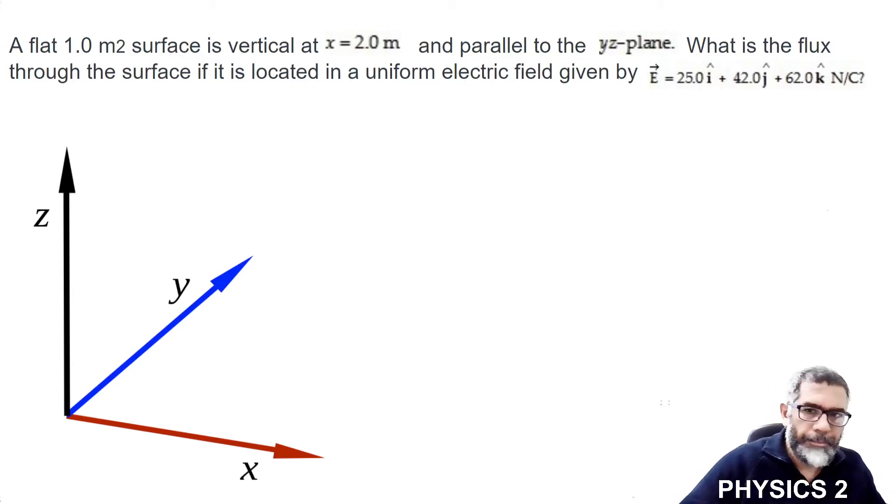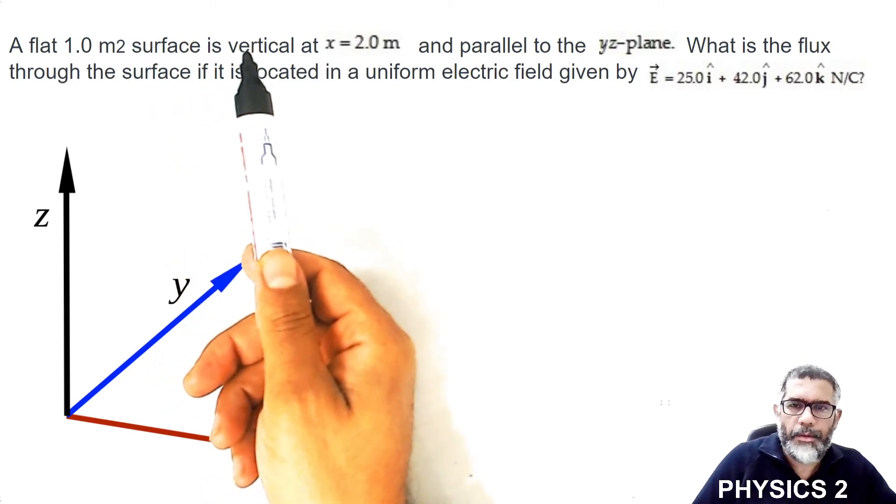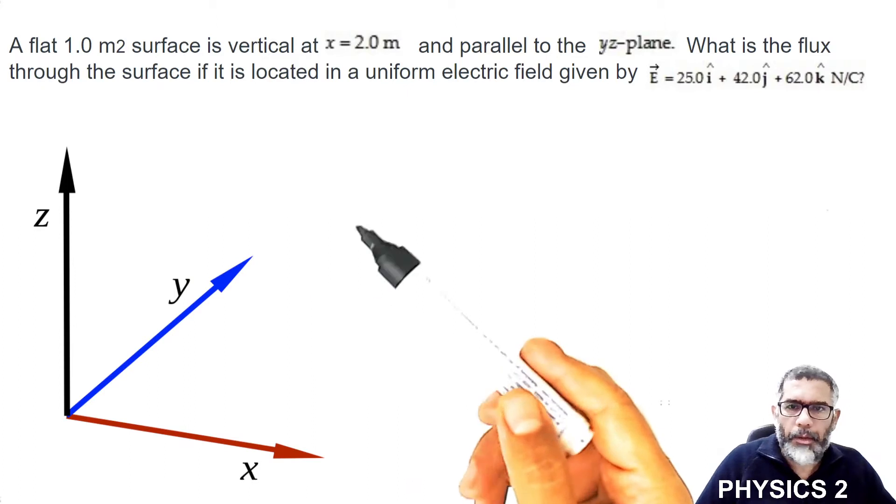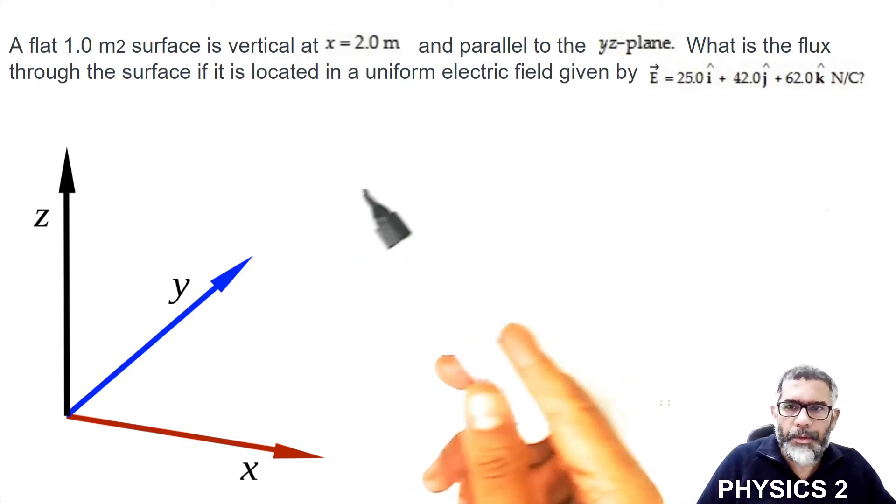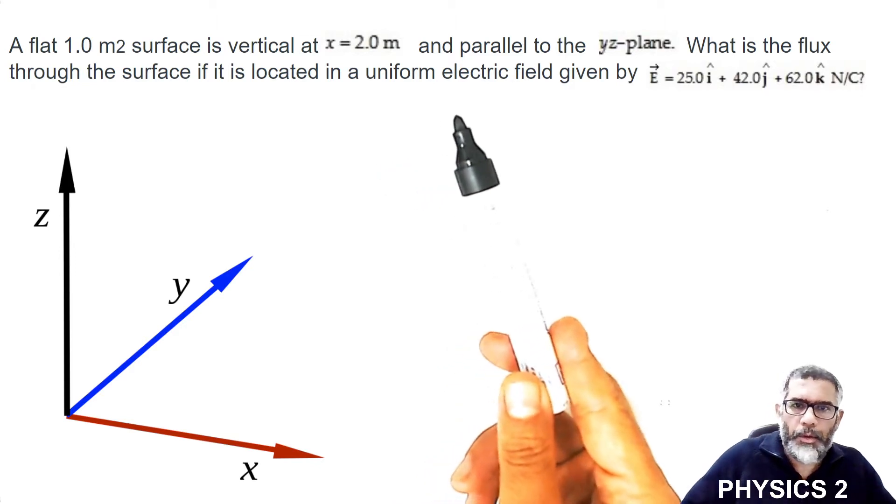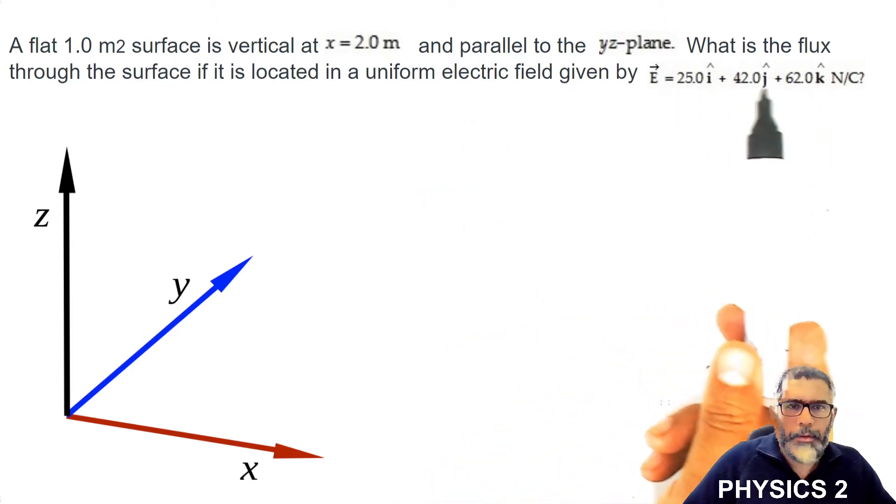Okay, so a flux problem. A one meter square surface is vertical at x equals two meters and parallel to the y-z plane. What is the flux through the surface if it is located in a uniform electric field given by this expression? i, j, and k are the unit vectors in x, y, and z directions.